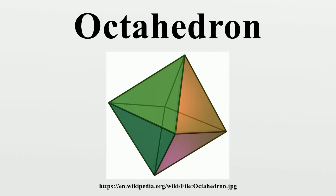Related polyhedra: a regular octahedron can be augmented into a tetrahedron by adding four tetrahedra on alternated faces. Adding tetrahedra to all eight faces creates the stellated octahedron. The octahedron is one of a family of uniform polyhedra related to the cube. It is also one of the simplest examples of a hypersimplex, a polytope formed by certain intersections of a hypercube with a hyperplane.